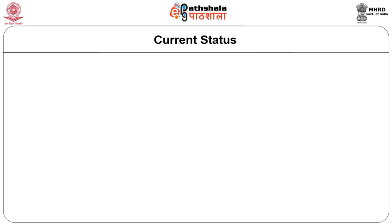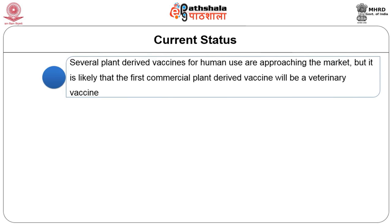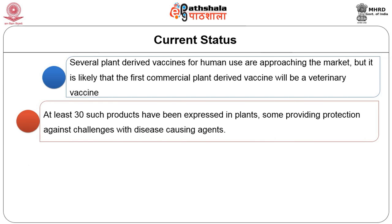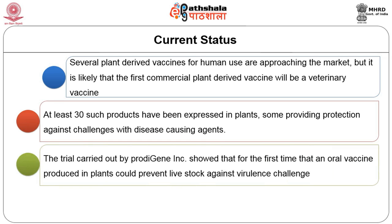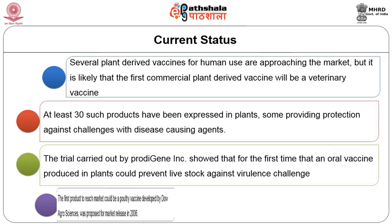Now let us look at the current status of edible vaccines. Several plant-derived vaccines for human use are approaching the market, but it is likely that the first commercial plant-derived vaccine will be a veterinary vaccine. At least 30 such products have been expressed in plants, some providing protection against challenges with disease-causing agents. The trial carried out by Prodigene Company showed for the first time that an oral vaccine produced in plants could protect livestock against virulence challenge. The first product to reach the market could be a poultry vaccine developed by Dow AgroSciences, proposed for market release in 2006.